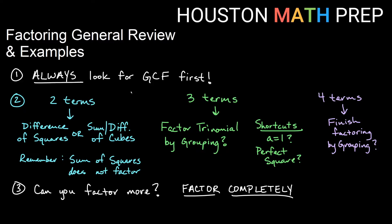Once you've factored out the greatest common factor, you'll have some common scenarios. If you have two terms left, it might be a sum or difference of squares, or a sum or difference of cubes — those are special factoring cases. Remember that sum of squares will not factor; that will be prime. Difference of squares will factor into conjugates — same terms in the factors but one adds and one subtracts. Sum or difference of cubes: we use SOAP to apply the signs, and we have a short and a long factor.